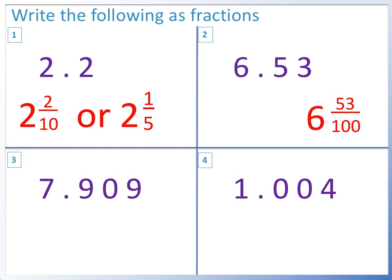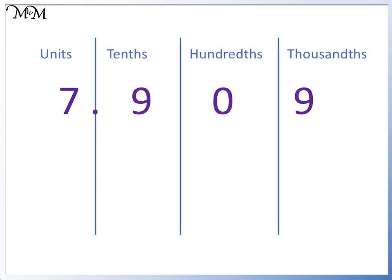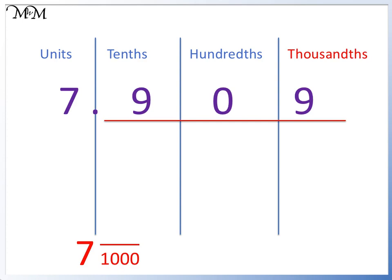Question 3: 7.909. 7 is a whole number, so we can just write that down. 0.909 finishes in the thousandths column, so our denominator will be 1,000. Reading across from the decimal point, we have 909, so 909 thousandths. Our answer is 7 and 909 thousandths.